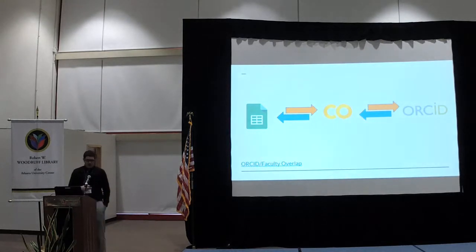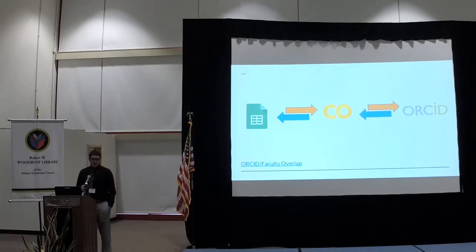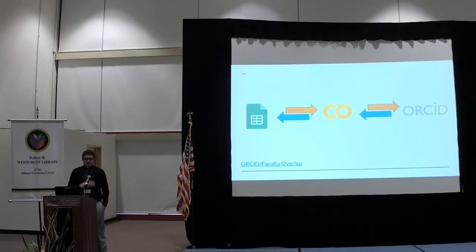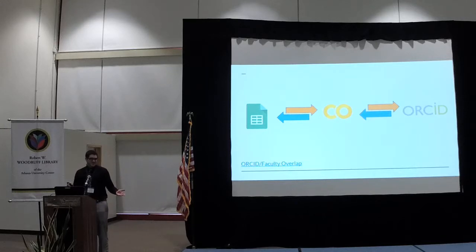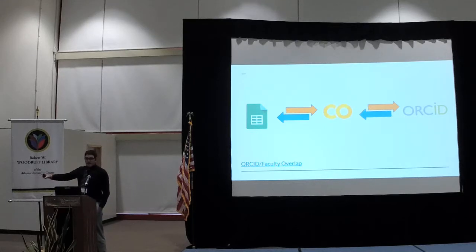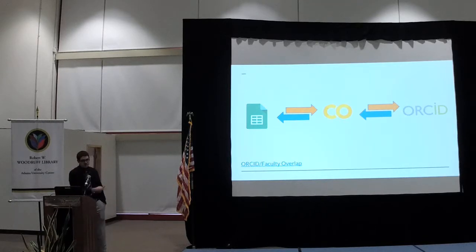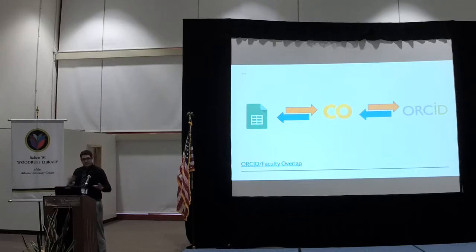At NCSU, we're experimenting with integrating ORCID on campus. We want all our researchers to sign up for ORCID, and before doing that we asked: how many researchers, students, graduate students, and post-docs already have ORCID IDs? We used a Colaboratory Notebook for this. We have a giant Google Doc with 15,000 names. The Colaboratory Notebook queries the Google Doc, grabs a name, queries the ORCID API, does a little analysis on the return — checking how many results come back and whether they have an NCSU affiliation — and then puts the result back into the Google Doc.